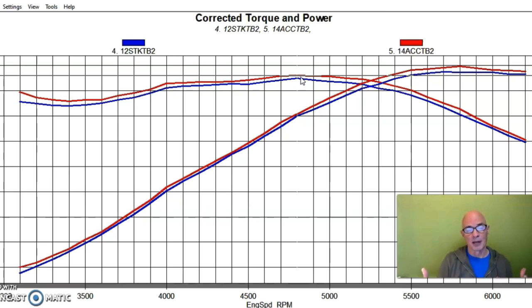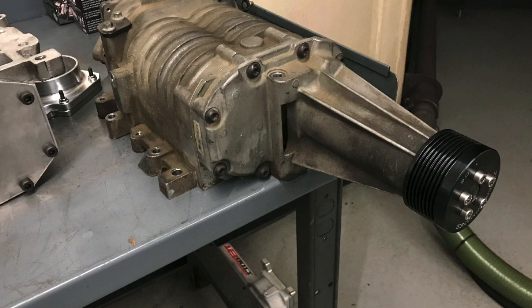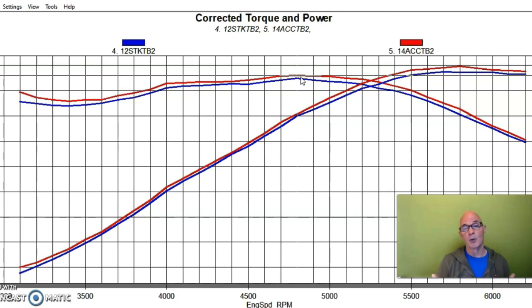Or if you have a positive displacement blower - Kenny Bell or Whipple or TVS or something - then you definitely want to go to a super big throttle body. But in most cases on this kind of mild application you're only going to get a handful of horsepower.